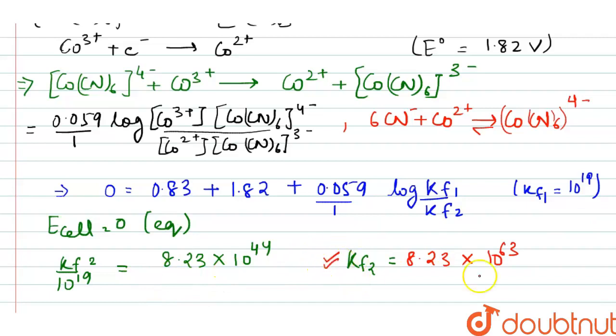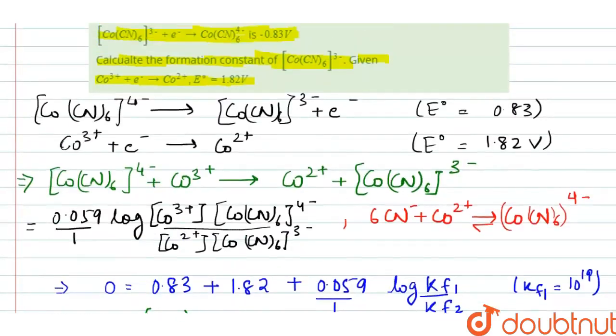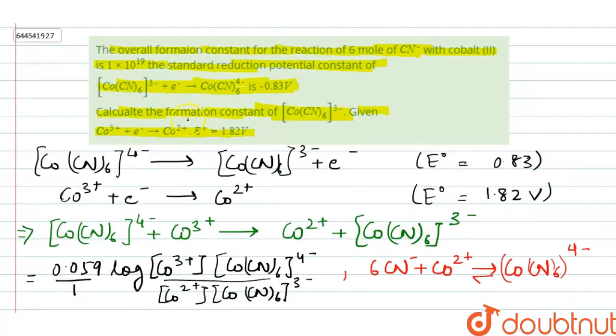So our right answer is 8.23 into 10 to the power 63. That is the formation constant for [Co(CN)6]3-.